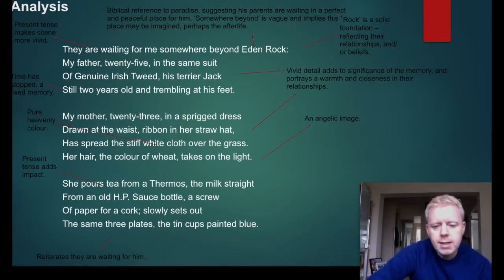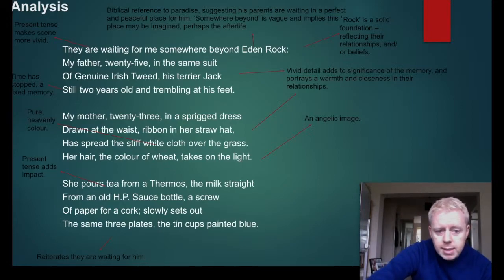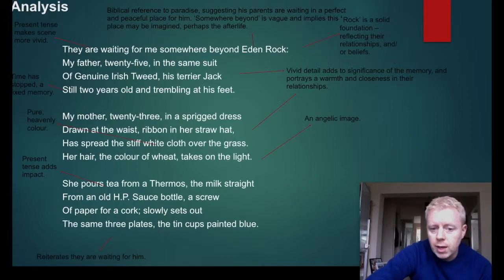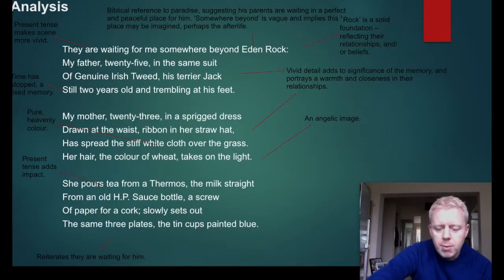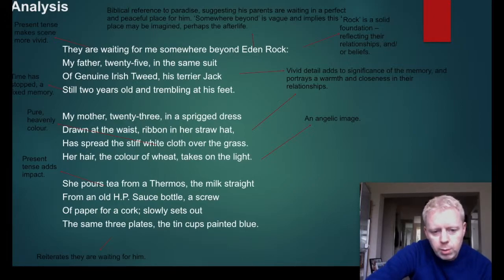There's a sense that something otherworldly is going on here. In the second stanza, the mother has spread the stiff white cloth — the colour white has connotations of purity and heaven. Her hair, the colour of wheat, takes on the light — almost an angelic image. She pours the tea, present tense again adding impact, and 'the same three plates' — are they waiting for him now? Are they setting a place for him? Reassuring him that death is nothing to be feared, that they will be reunited in death, and it's no big deal.